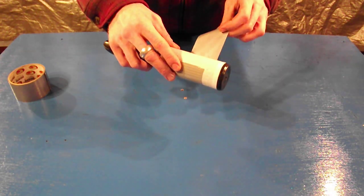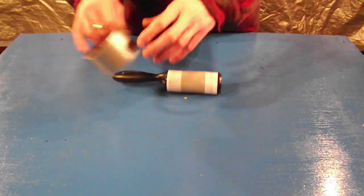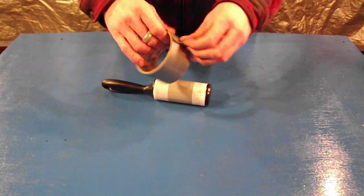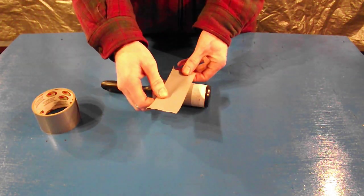Just take your old lint roller, wrap duct tape around it backwards. I'm going to rip off about an 8 inch section. Repeat that process.